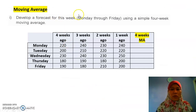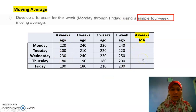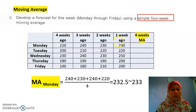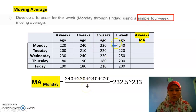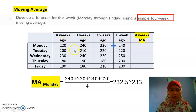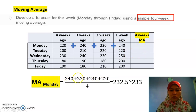Let's start with moving average. They want Monday to Friday using a simple 4-week moving average. Moving average is very simple — it's just a normal average. Go from the nearest week to the one you want to forecast. For Monday: 240 plus 230 plus 240 plus 220, divided by 4, gives us 232.5.